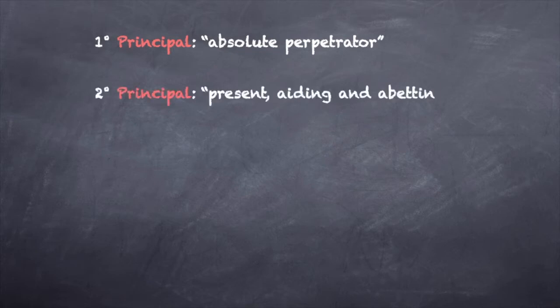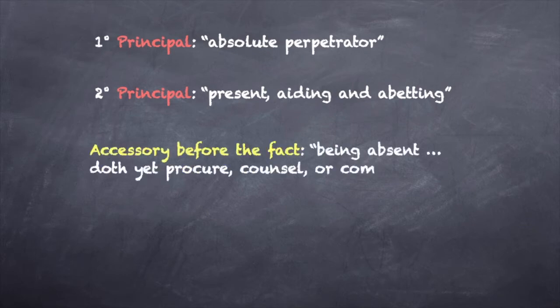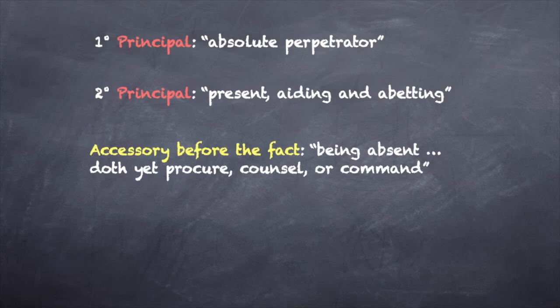Next comes the second degree principal, who is present, aiding and abetting. This is the person who points out the target, or distracts the victim, or stands lookout, whether at the scene or at a convenient distance from the first degree principal. Then we have the accessory before the fact, who being absent, doth yet procure, counsel, or command the principal or principals. Today, each of these three categories of actor are held liable for the same offense as if each were the absolute perpetrator.